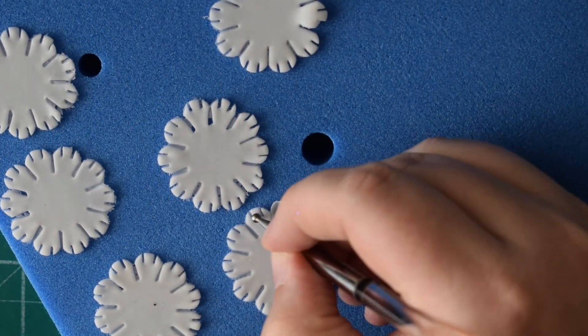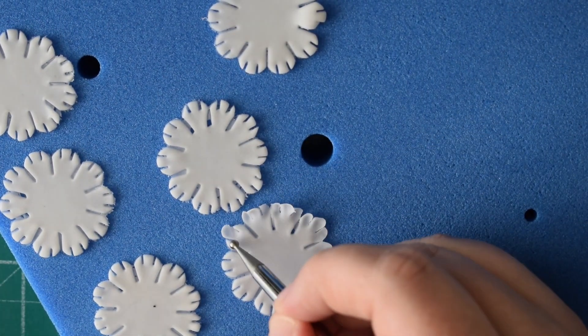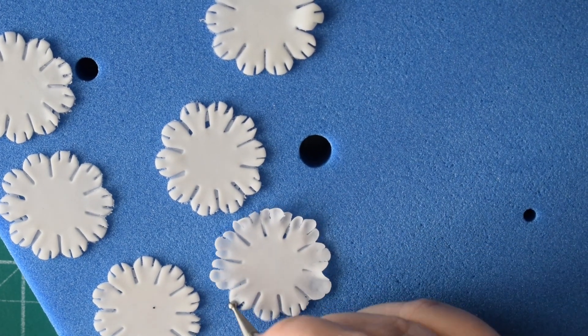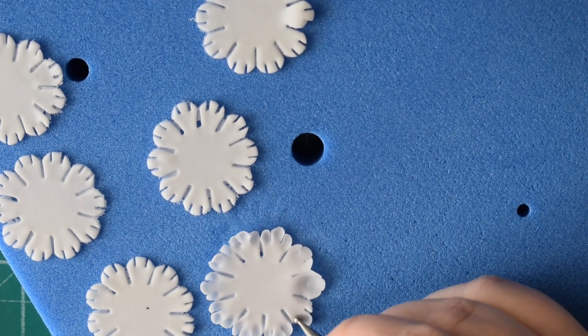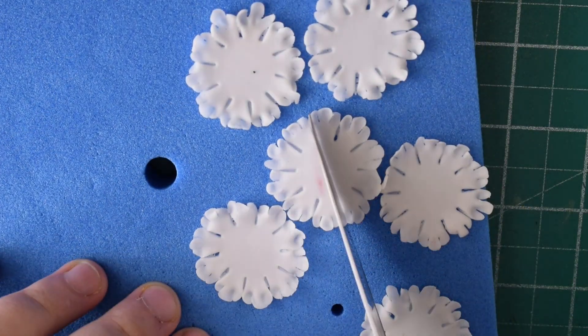And so we're just going to take a small balling tool and we're just going to frill the edges. Now the reason I've used a small one is we want to keep those individual little petals at the end. If you use a larger tool you're going to lose that shape.